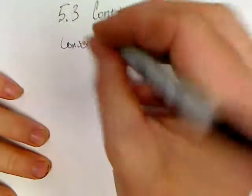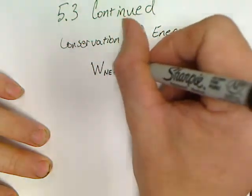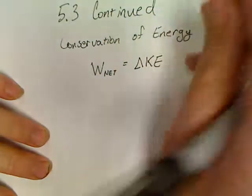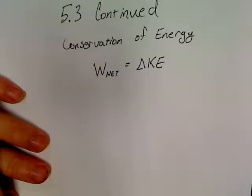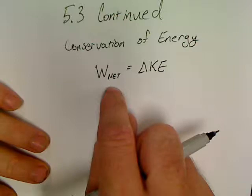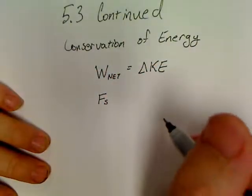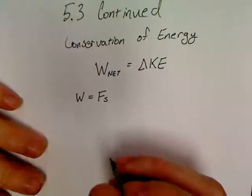We can really do every single problem almost just by doing this. This is the most beautiful equation in this entire unit. Because all you have to know is what kind of work is being done in a problem. Is somebody pushing something? Well, if somebody's pushing something, then we've got an FS. So we've got just plain old-fashioned work being done.